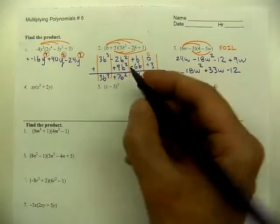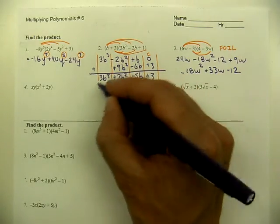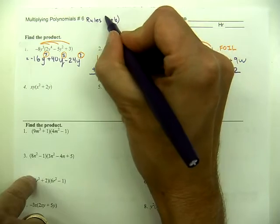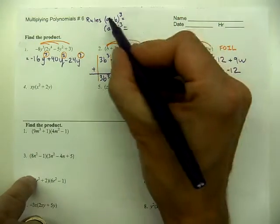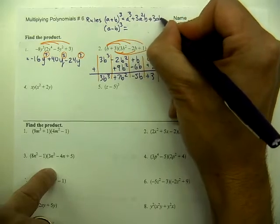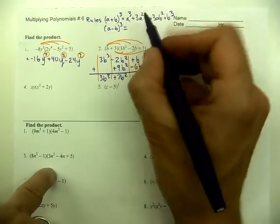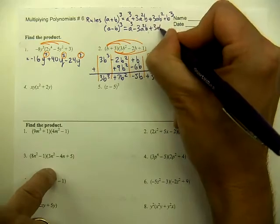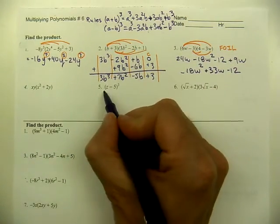Let's jump down to number five. Here we have something different—a binomial cubed. We could foil it out and foil it out again, but there is a shortcut, a pattern. Here are a couple of rules for when we have a binomial cubed. We have two versions: a plus b or a minus b cubed. These are the two patterns: a cubed plus 3a squared b plus 3ab squared plus b cubed. The next pattern is exactly the same, but we alternate every other term with a sign change.